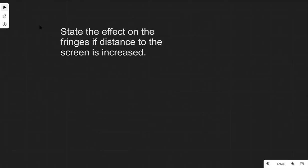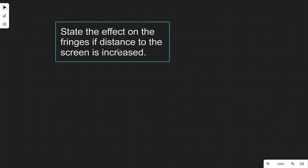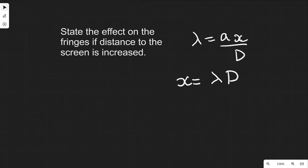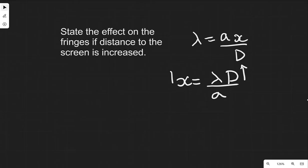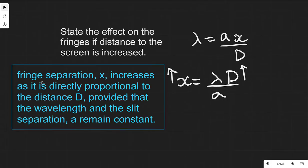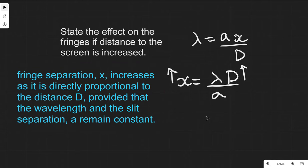A very common exam question asks: what is the effect on the fringes if the distance to the screen is increased? Using X equals lambda D over A, if the distance to the screen is increased then the fringe separation will also increase, provided everything else is constant. The fringe separation X increases as it is directly proportional to the distance D, provided that the wavelength and slit separation A remain constant.